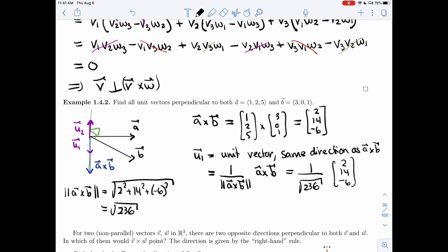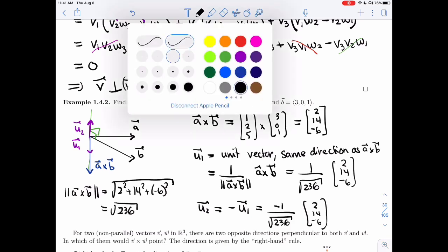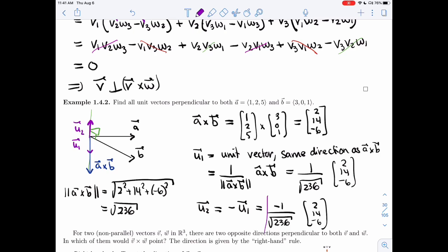That's a unit vector that's perpendicular to 1, 2, 5 and to 3, 0, 1. To get U2, I want to get the opposite direction but the same length as U1, so minus U1, so it's minus 1 over root of 236, 2, 14, minus 6. So I have these two vectors. They're both unit vectors, and they're both perpendicular to A and B.